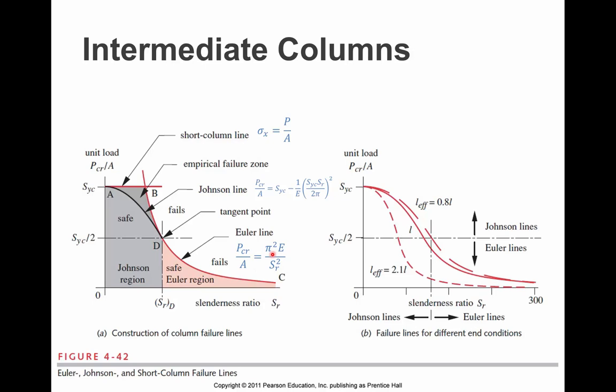So if we put in SYC over 2 in for P critical and solve for SR, this will give us the SR that determines whether or not our column is an Euler column or a Johnson column. Then we'll take our particular column and we'll see which side of the slenderness ratio it falls on.